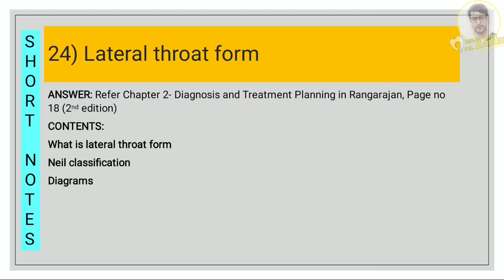For the lateral throat form, refer chapter 2, diagnosis and treatment planning, page number 18. First write what is the lateral throat form, then mention the Neal classification — the three types: deep, moderate, and shallow — and draw all three diagrams for each type.